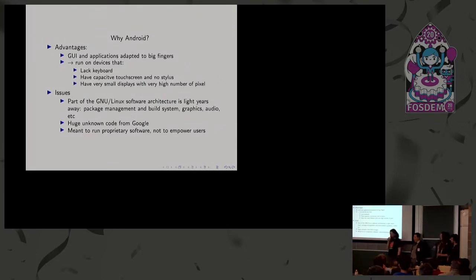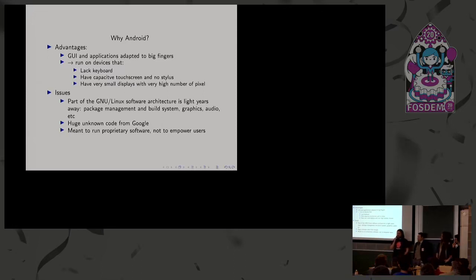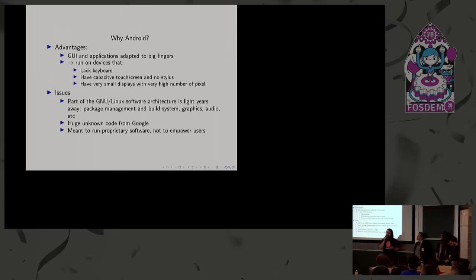Long ago there were even new Linux smartphones, but they're not well adapted for big fingers — you need all applications adapted, the DPI is very high, the screen is small. On Android it's already done. The issue is that with new Linux many low-level things are better and you even have package management, which Android is still lacking. Android also has a huge unknown codebase from Google, not reviewed by the usual free software community — more like code drops — and it's meant to run proprietary software.